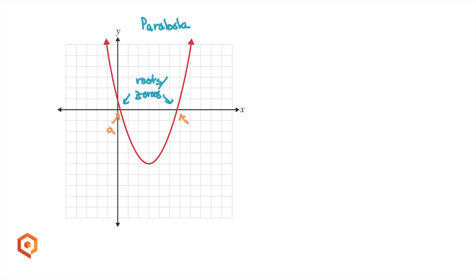If we know that x equals a and x equals b are two zeros of a quadratic function, then the corresponding linear factors are x minus a and x minus b. Multiplying the two linear factors together, x minus a times x minus b, we get the basis for quadratic equations and functions.